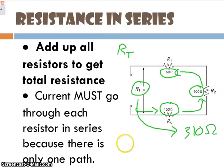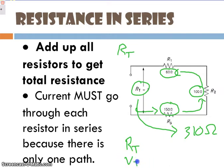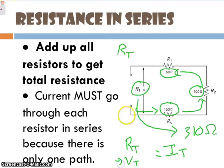Using our total resistance, I could have a total voltage and calculate a total current, which is what we'll work on doing tomorrow. The way I find the total voltage is really simple — just adding up however many batteries I have.